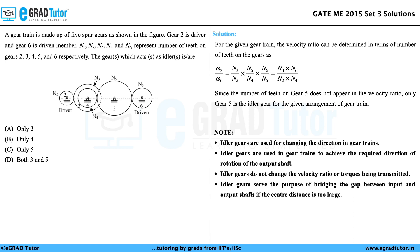Idler gears do not change the velocity ratio or torques being transmitted, and idler gears serve the purpose of bridging the gap between input and output shafts if the center distance is too large. Hence, for this question, the correct answer is option C.